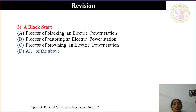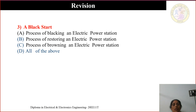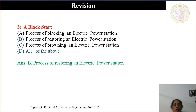Third question: What is a blackstart? (A) Process of blacking an electric power station, (B) process of restoring an electric power station, (C) process of browning an electric power station. When all the blackouts have happened, to restore the power back, we call it blackstart. So the correct answer is option B — process of restoring an electric power station when a blackout has happened.